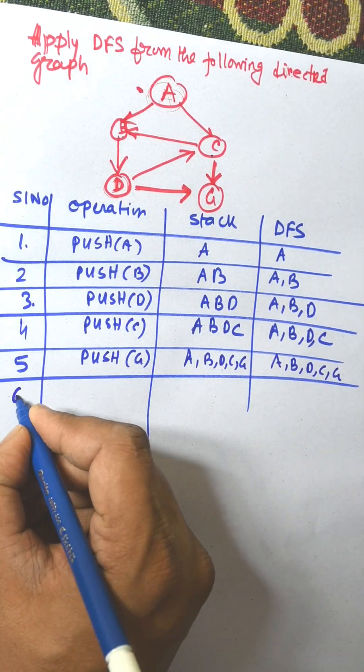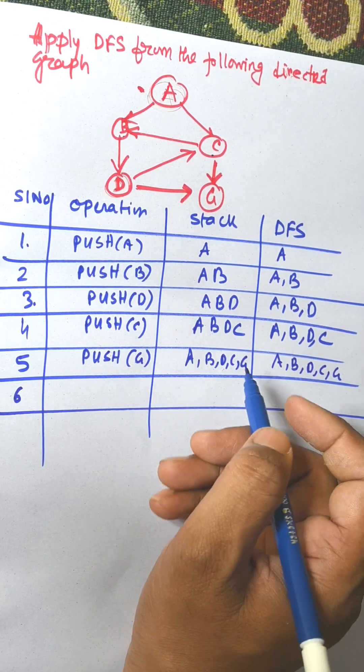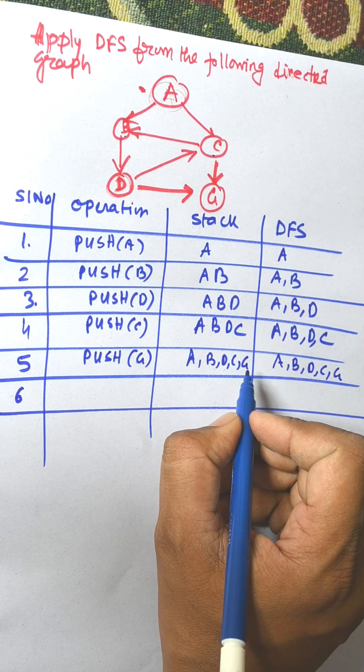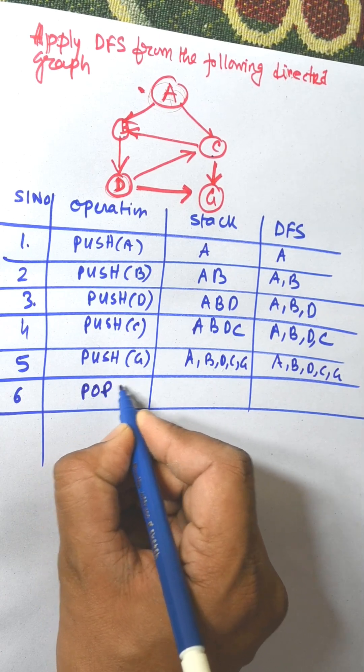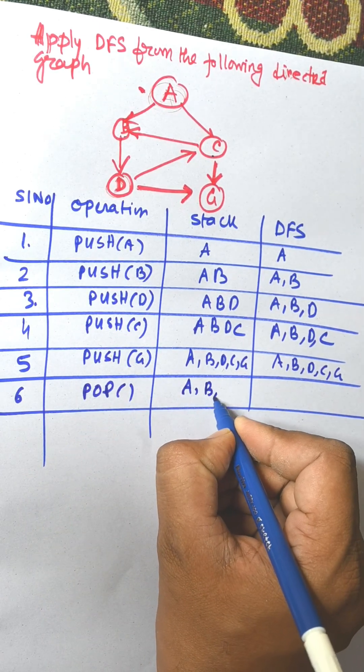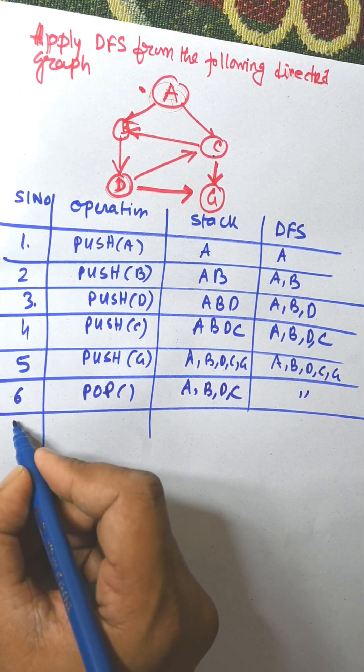All nodes are visited here. Now we need to check whether there is any element remaining. From G it is not possible to visit. So that is pop. Stack is A B D C. Answer remains the same.